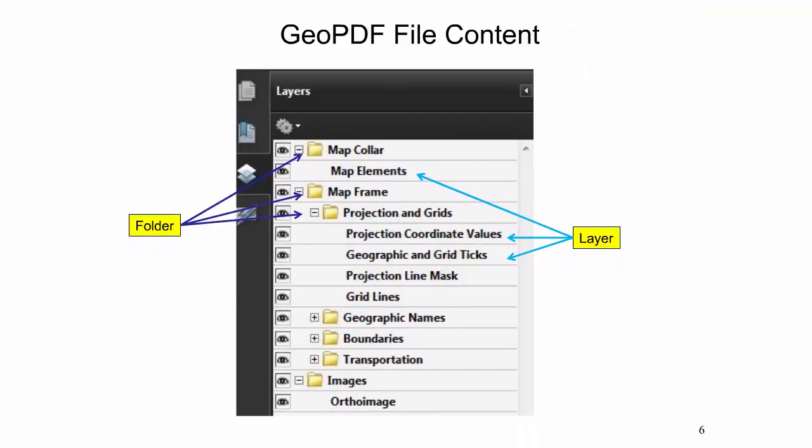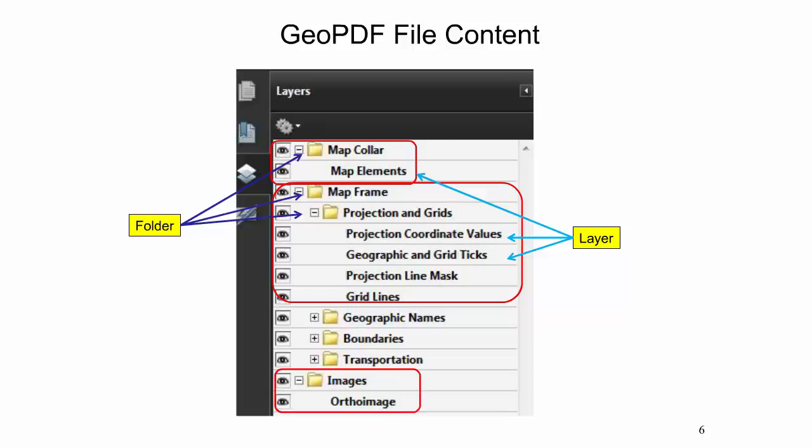This image reflects the view of folders and layers in a US Topo GeoPDF file when opened with Adobe Acrobat Reader. The file contains folders and layers, where folders can contain subfolders and layers are placed in folders. A US Topo GeoPDF file contains, at a minimum, the folders and layers circled in red, although in most cases more layers and folders will be available. The first top-level folder relates to the map collar, which is the area outside the projection line and includes all text, diagrams, and other information in that area. The second top-level folder is named Map Frame and relates to the map interior — the actual map content. Layers in the map frame can be overlaid with an ortho image, which is stored within the image's top-level folder.